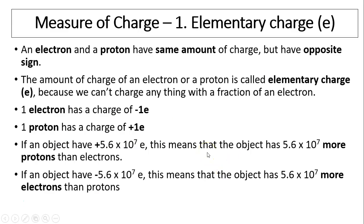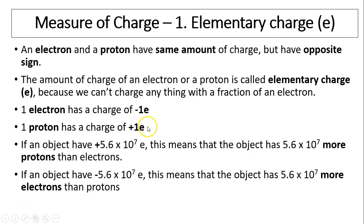How do we measure charge? There are two ways — similar to measuring mass with different units like pounds or kilograms. In electricity, both units are standard. We can use elementary charge: an electron and a proton have the same amount of charge. That amount is called elementary charge. An electron has negative one elementary charge; a proton has positive one elementary charge. These values are listed in your reference table.